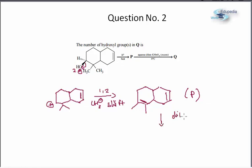And in case you remember the nature of dilute KMnO4, it is to carry out syn dihydroxylation in alkenes.